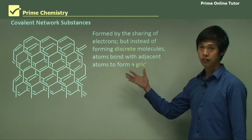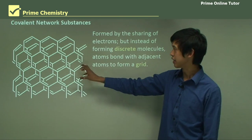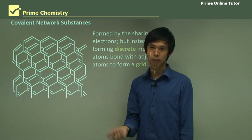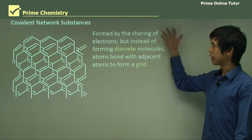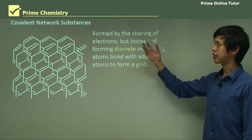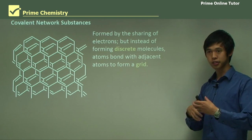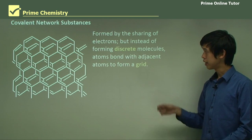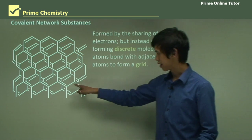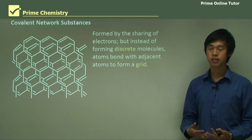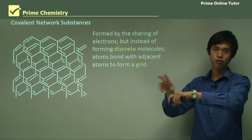Now we're going to talk about covalent network substances. The image looks complex, but at each of the corners is simply a carbon atom — just imagine lots and lots of carbons all stuck together. Covalent network substances are also formed by the sharing of electrons, but instead of forming discrete molecules, atoms bond with adjacent atoms to form a grid or network. Each of these carbons bonds to all of its adjacent carbons to give a network structure, rather than little molecules that are free to move by themselves.